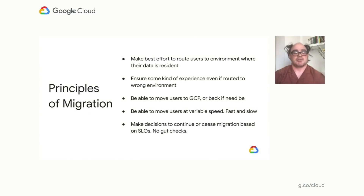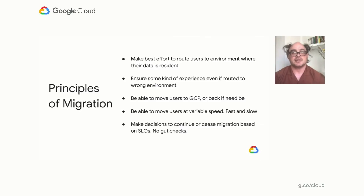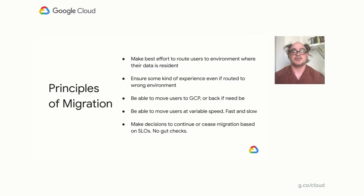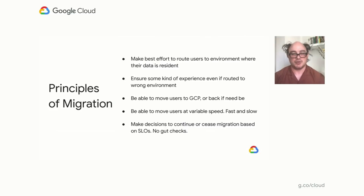As we were thinking about how to do this progressive migration, we had to think about our guiding principles. The first was to make our best effort to route users to the environment where their data is resident — since we shard data by user, if I move my data to GCP, I should start routing my requests to GCP. We also wanted to make sure that if we didn't route correctly and my data is in GCP but I got routed to the old data center, that should still work — we don't want to be throwing errors on a misroute.